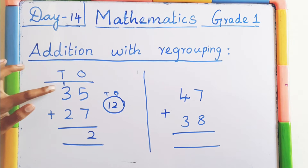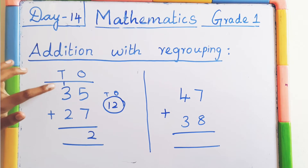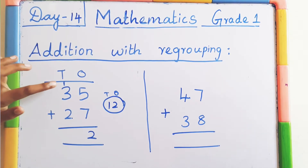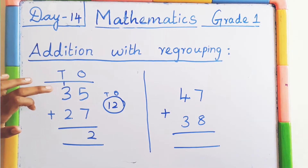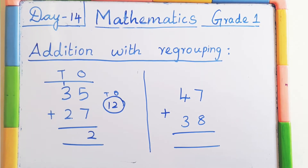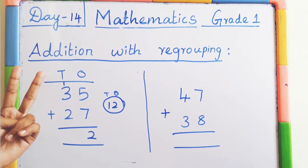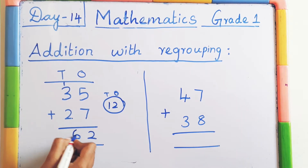Can you see this? Now add the numbers in the tens place: 1, 3, and 2. First add the carry over number 1 with the first number 3. So 1 plus 3 equals 4. Then 4 plus 2: keep 4 in the mind, 2 on the finger — after 4: 5, 6. So the answer is 62.